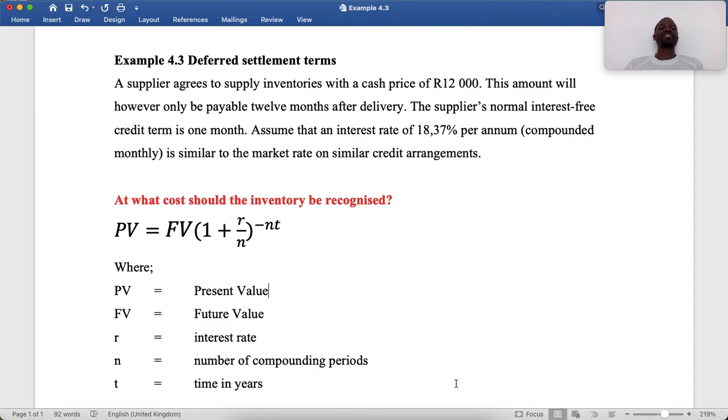We need to discount these 12 months to present terms. The supplier's normal interest-free credit term is one month. Assume that an interest rate of 18.37% per annum compounded monthly is similar to the market rate on similar credit arrangements.